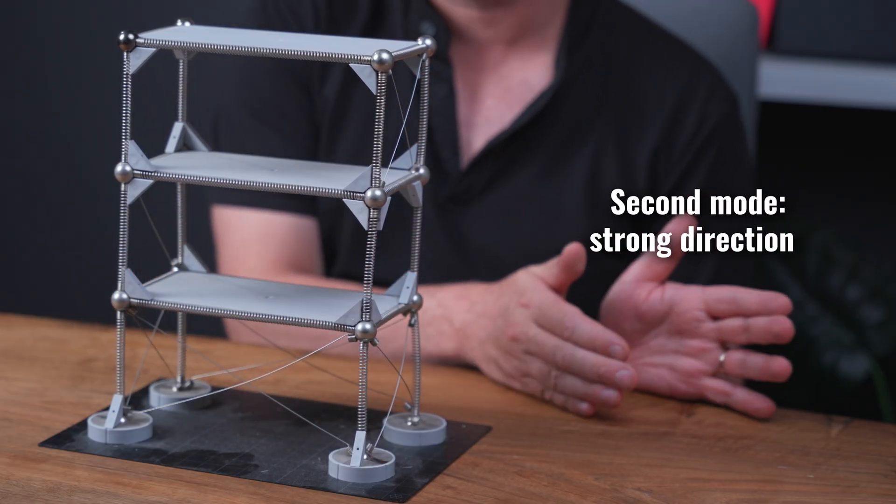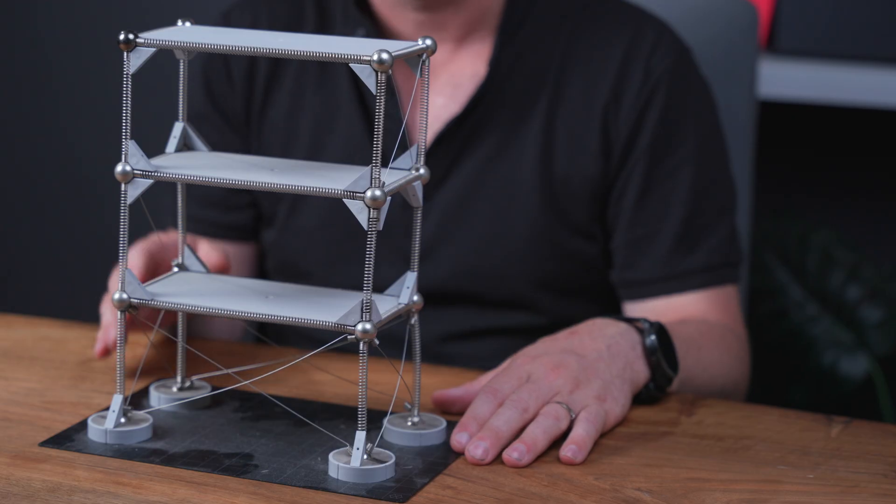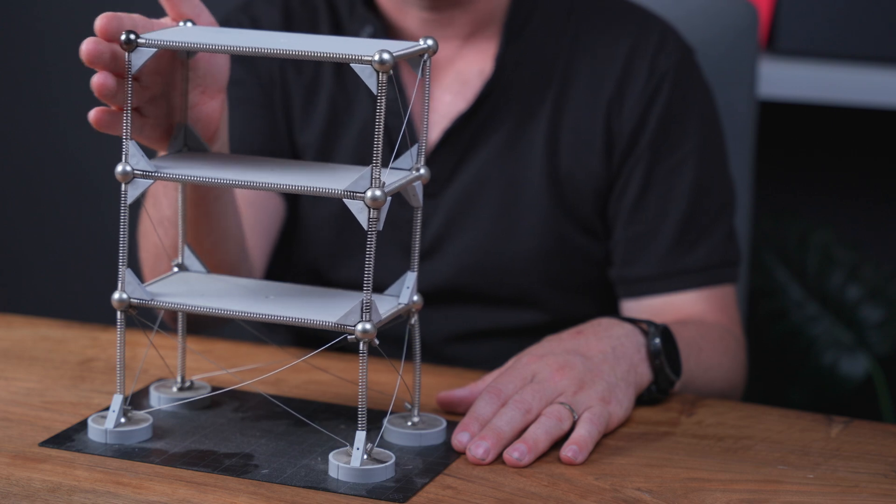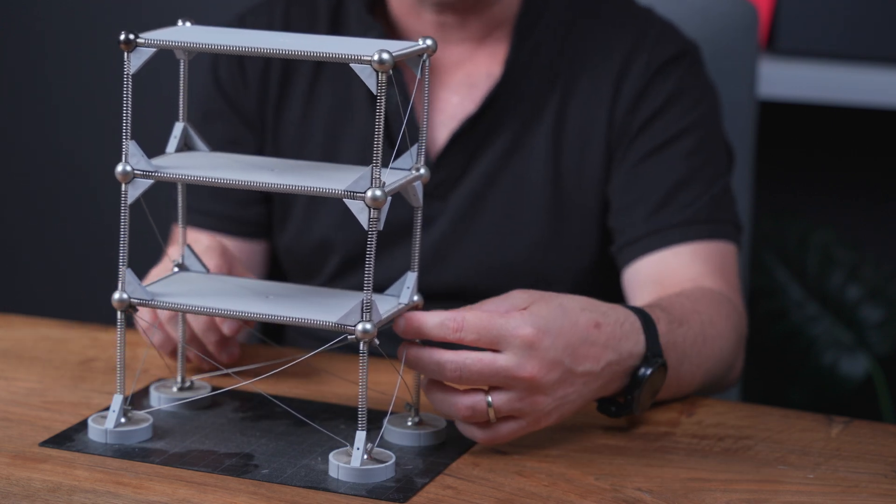You want to make sure that the building moves in a certain way and the torsion mode is in your third place. So you'll have direction in the strong direction, you'll have direction in the weak direction and then into that torsion. So which way is the strong direction? It's the way that you have the most amount of bracing.